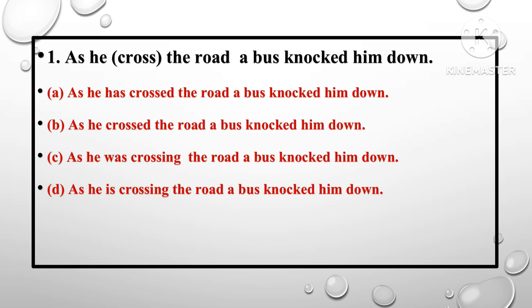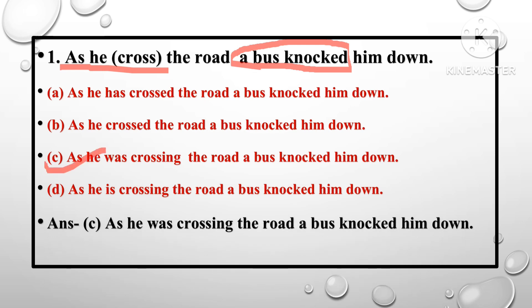The correct answer is: as he crossed the road, a bus knocked him down — or when he crossed the road, the bus knocked him down. The correct answer is Option C: as he was crossing the road, a bus knocked him down.